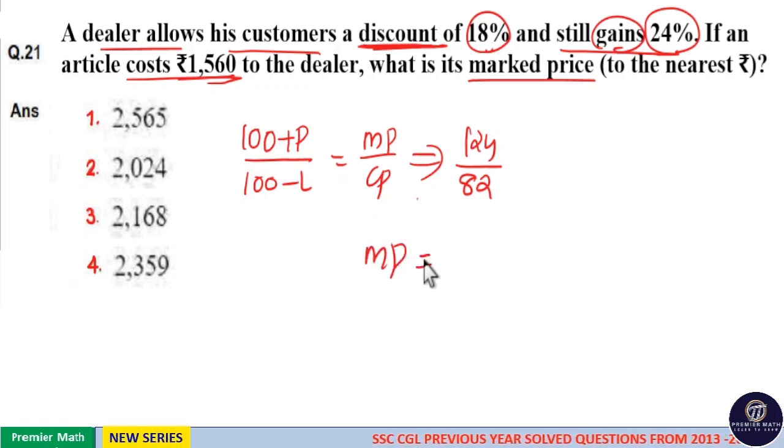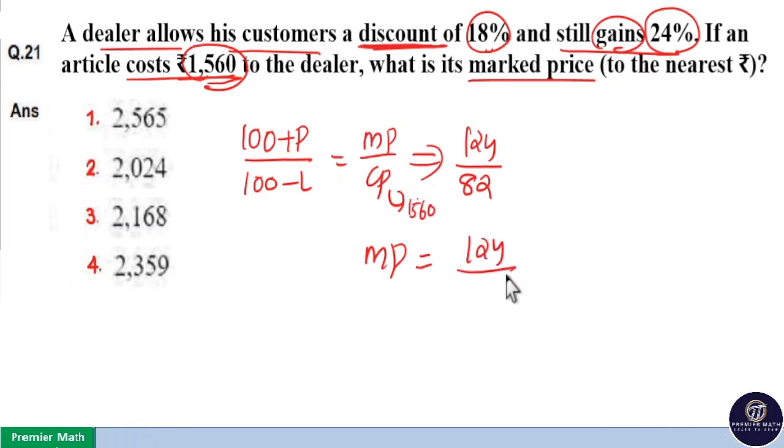Marked price equals... you already know cost price equals 1560. So, marked price equals 124 by 82 into 1560.